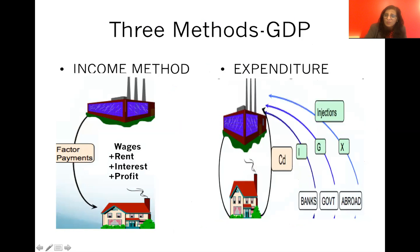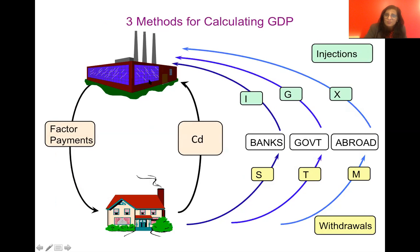You can also remember the sector models: a two-sector model has only firms and households; a three-sector model adds government; a four-sector model adds the foreign sector, making it an open economy; and a five-sector model adds the financial sector.